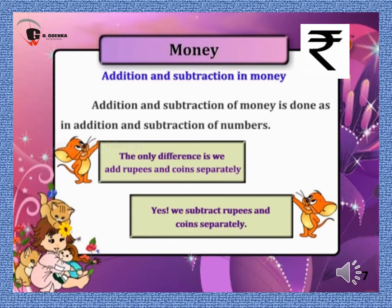Let's move forward towards addition and subtraction in money. Addition and subtraction of money is done the same way as addition and subtraction of numbers. The only difference is that we add rupees and paise separately, and we also subtract rupees and paise separately. We use a dot to separate rupees from paise when we solve or write money.